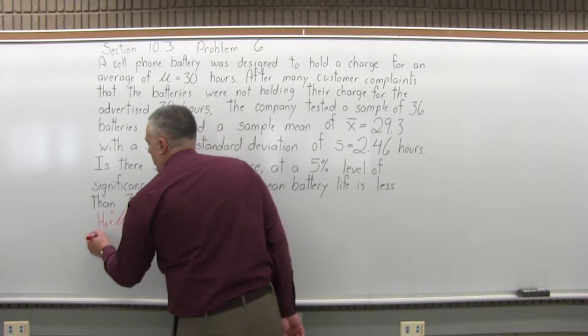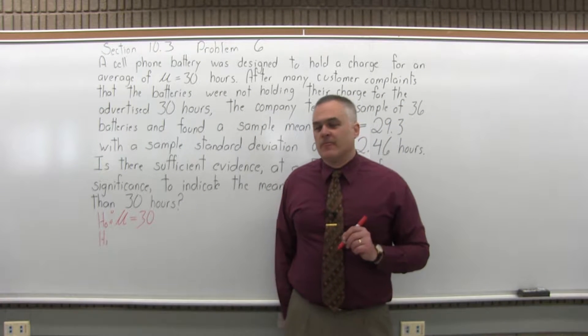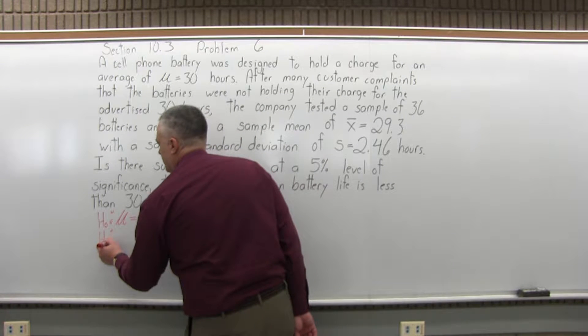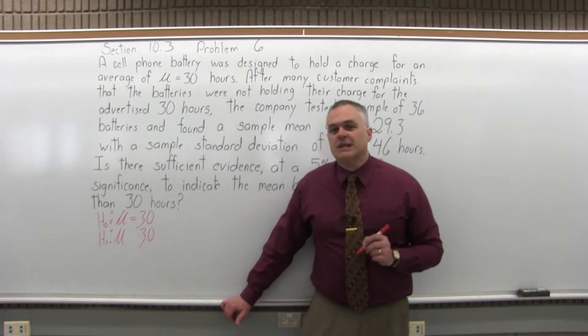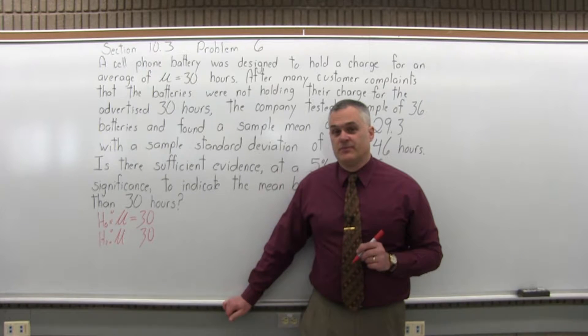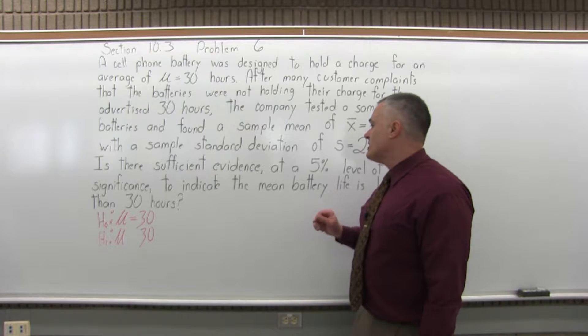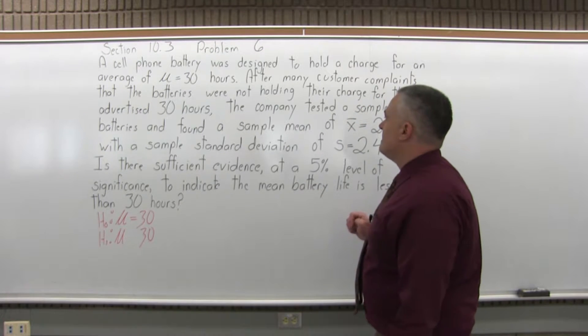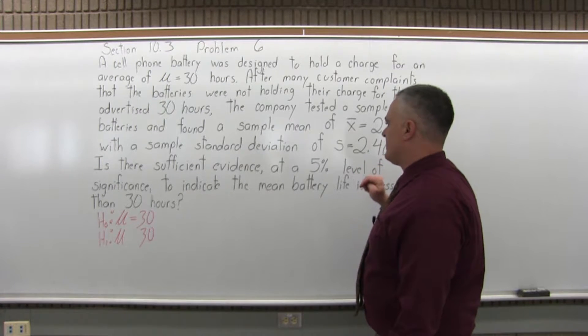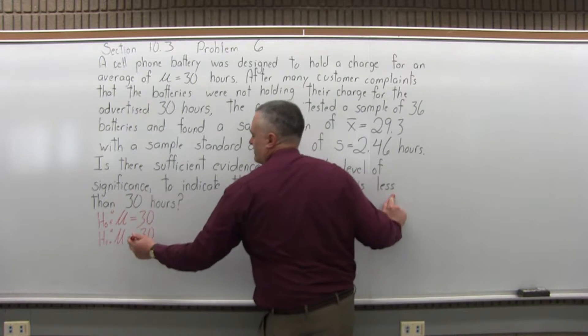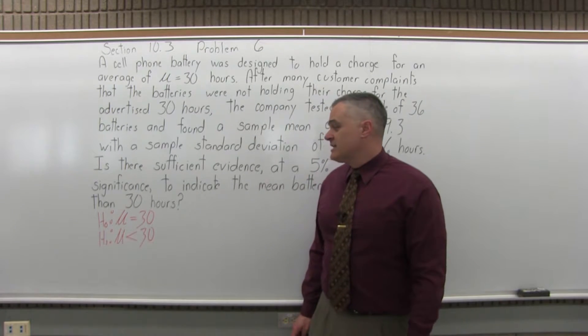Step two, state the alternate hypothesis. The symbol for alternate hypothesis is a capital H with a subscript of one. Then you put the colon, you put the mu, you put the same number that was used in the null hypothesis, but you use a different symbol. It will either be less than, greater than, or not equal to. So what are we testing in this particular question? We're testing to see that if the average is actually less than 30. So it's written out here, less than 30 hours. So that's what we want to see. So that's our alternate hypothesis.